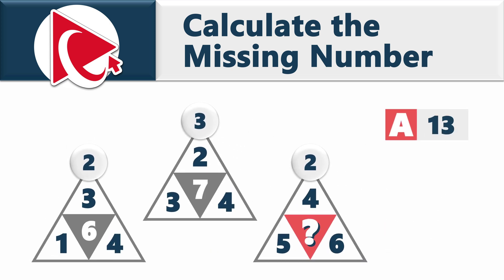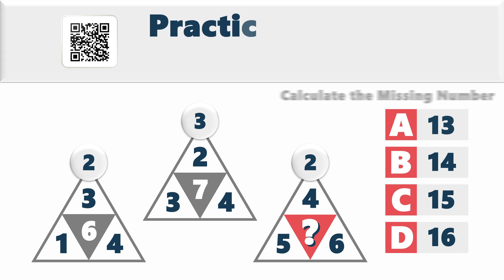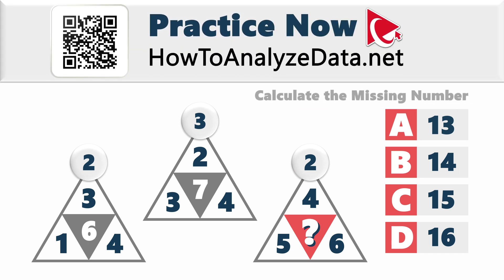You need to calculate the missing number and select out of four possible choices: Choice A, 13. Choice B, 14. Choice C, 15. And choice D, 16. Are you feeling challenged by this question? That's completely normal. Remember though, sometimes the simplest solutions are the most effective. Let's approach this with fresh eyes and innovative thinking.